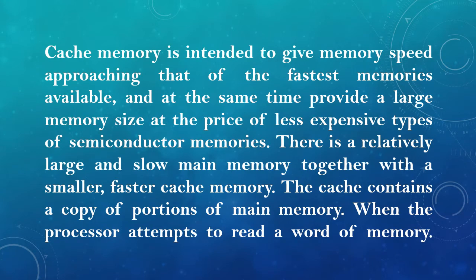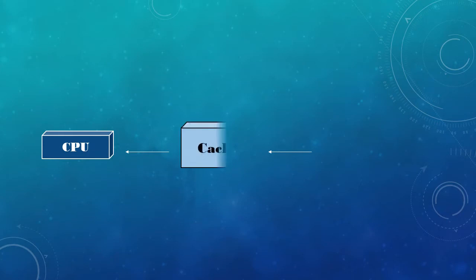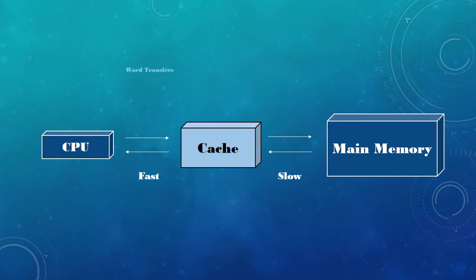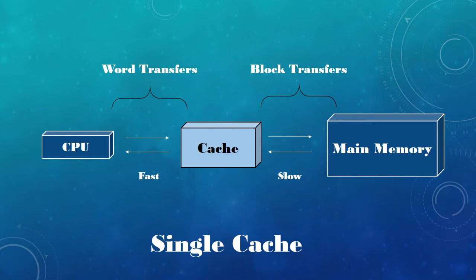When the processor attempts to read a word of memory, from CPU to Cache the transfer rate is fast, and from Cache to Memory the transfer rate is slow. From CPU to Cache you call it word transfer, and when it comes from Cache to Main Memory you call it block transfer.